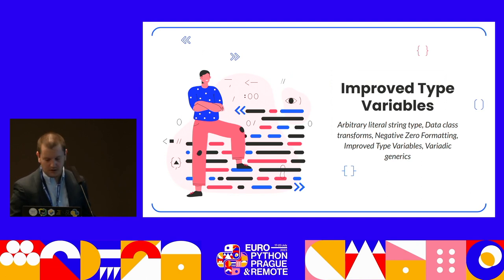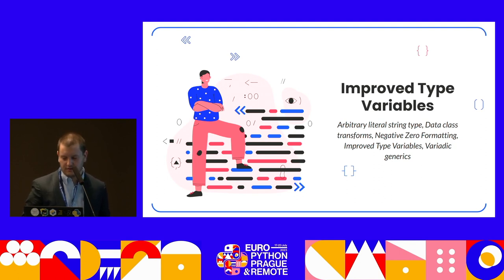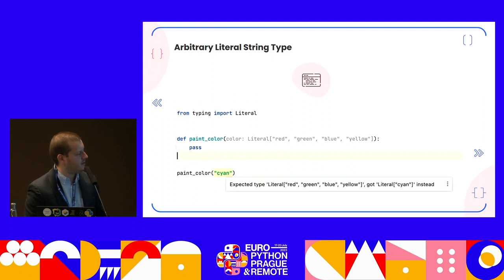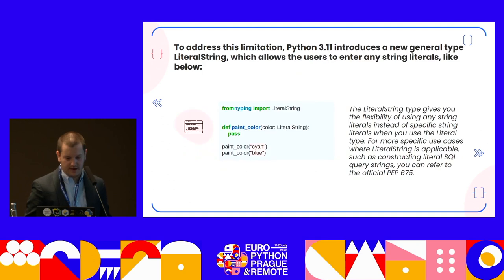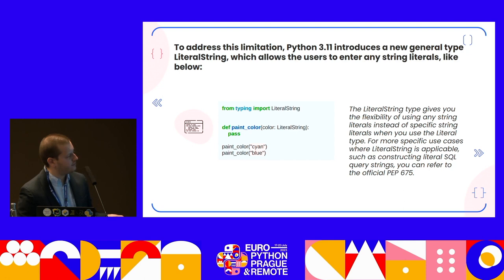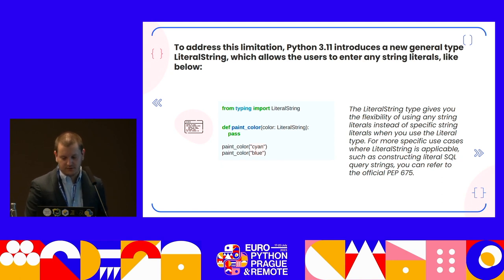Improved type variables. We have the arbitrary LiteralString type, dataclass transforms, negative zero formatting, improved type variables, and variadic generics. With LiteralString: if you have defined Literal with specific values, Python will warn you if you add a different string. But Python 3.11 introduces LiteralString, a new general type that allows users to enter any string literal. This is also applicable when constructing literal SQL query strings — you can refer to PEP 675 for more details.